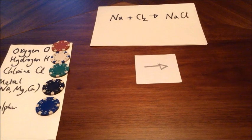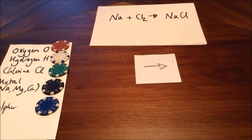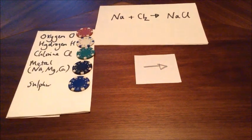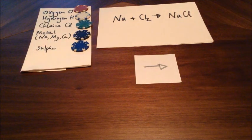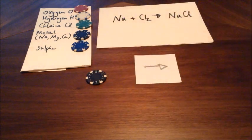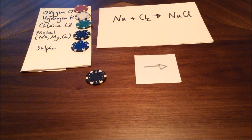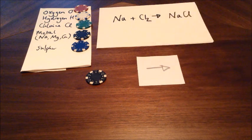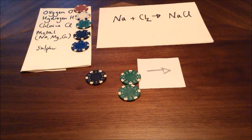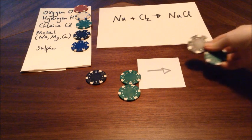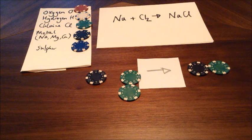Next up is sodium and chlorine — we're going to make sodium chloride. My chlorine is green and my metal is black. My sodium is going to be one black chip — there's no number in front of the Na, which means there is only one of them. There is a little two next to Cl₂, which means this is a molecule made up of two atoms covalently bonded together. On the other side I'm going to make an NaCl unit — one Na and one Cl bonded together.